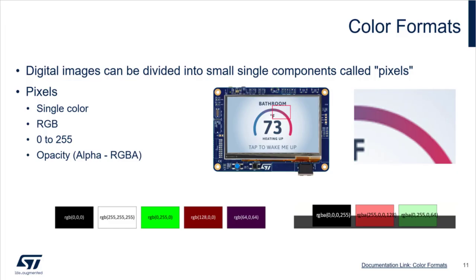Moving to the next concept: color formats. When creating graphics, we create digital images. To create these images we break them down into small single components called pixels. These pixels combined make the image shown on the display. A pixel is a single color component — if we look at a zoomed-in portion of a display, we can see many small squares or dots, each with a single color, which together form the image we see.